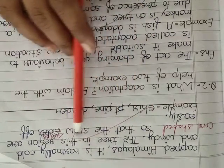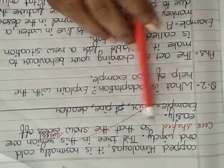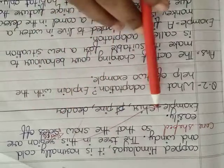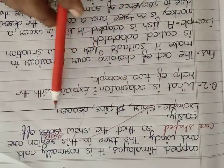The tree in this region are cone shaped so that the snow slides off easily. Example, chill, pine and deodar.